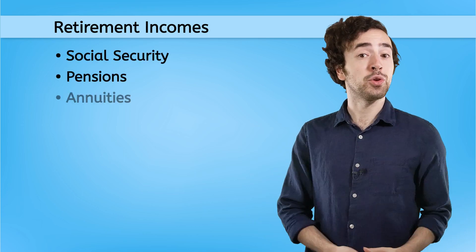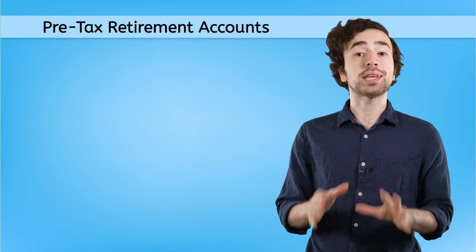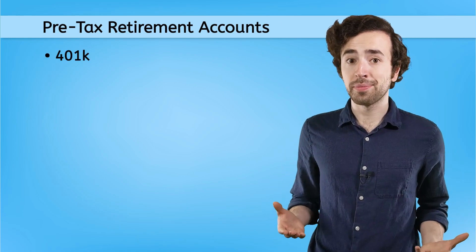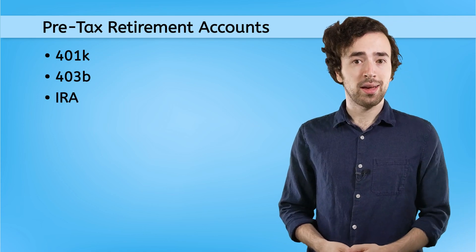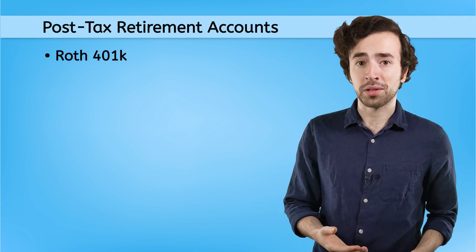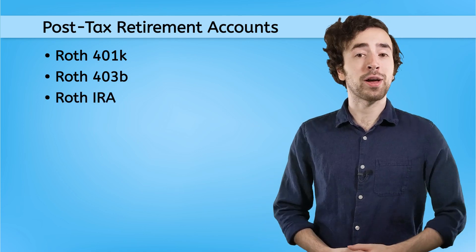Before we go and help my friends, let's do a quick recap on all the different retirement incomes and investments that we've learned about in this unit. First, we learned about retirement incomes like social security, pensions, and annuities. Then we covered pre-tax retirement accounts like the traditional 401k, 403b, and IRA. And finally, we learned about post-tax retirement accounts like the Roth 401k, Roth 403b, and Roth IRA.